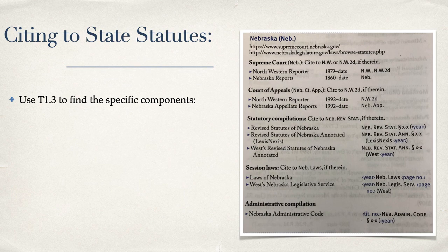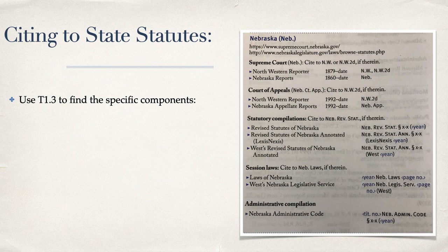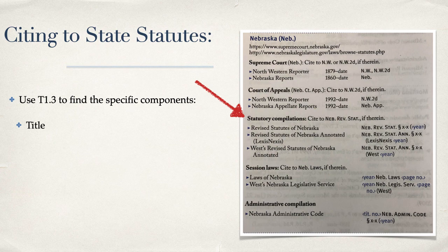In order to produce a Blue Book cite for a state statute, your new best friend, if it isn't already, is table T1. More specifically, table T1.3 contains the guides to citing state statutes. You'll find the forms for a particular state's statutes after the court and reporter information for a state.